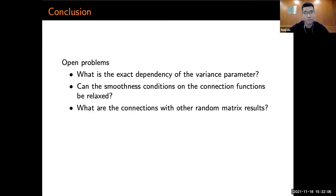So I will conclude the talk with several open problems. Obviously, the upper and lower bound doesn't match. So the first question is, what is the exact dependency of the variance parameter? The second one is, can we relax those smoothness conditions on the connection functions? The third one is, at a high level, how are those results connected to those random matrix results? Is there a deeper connection?